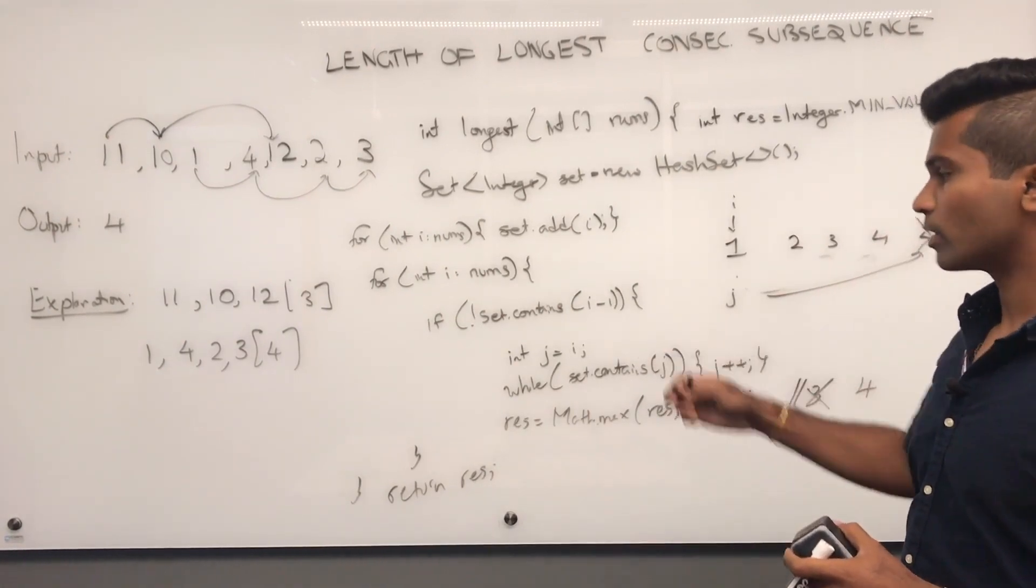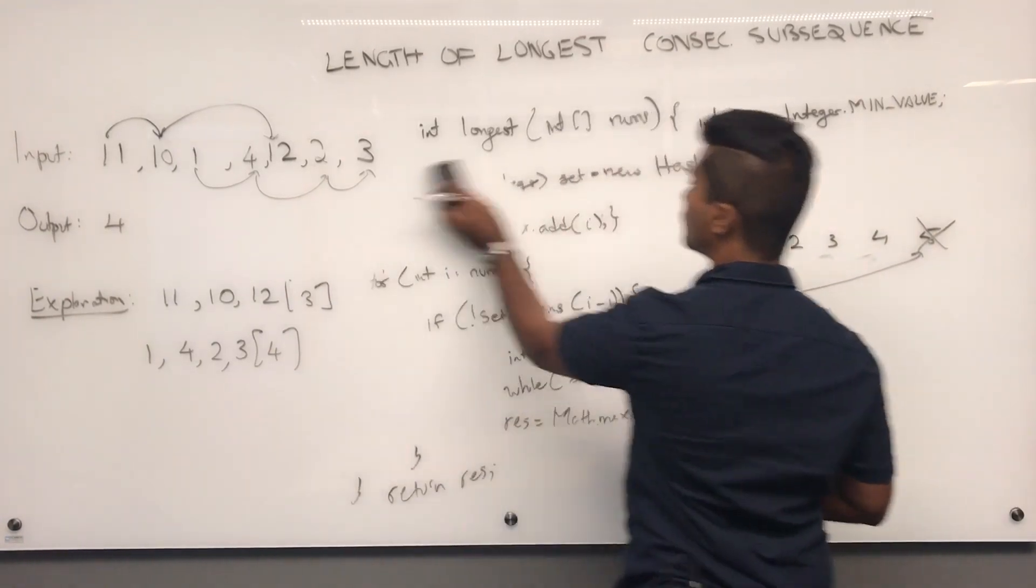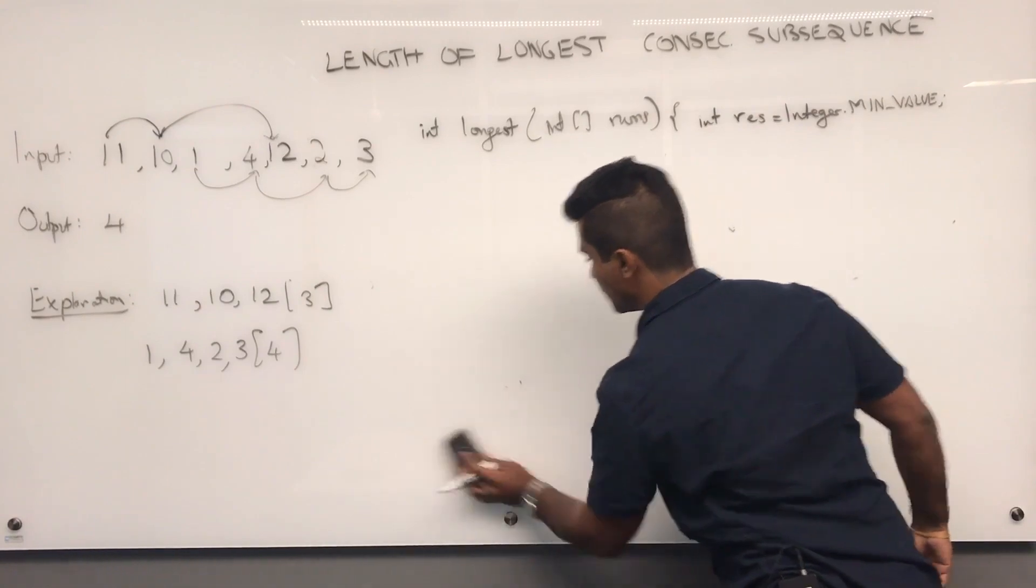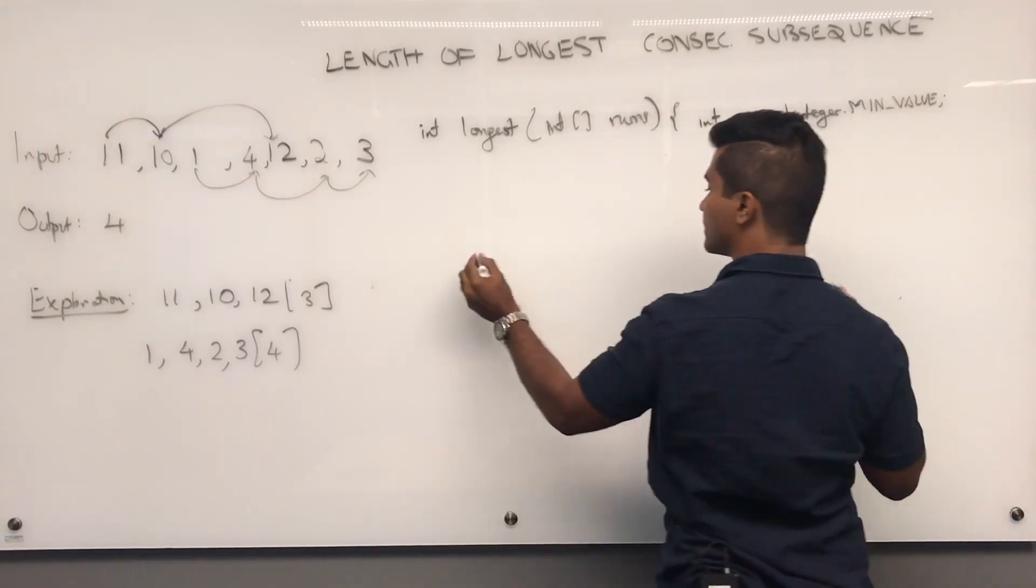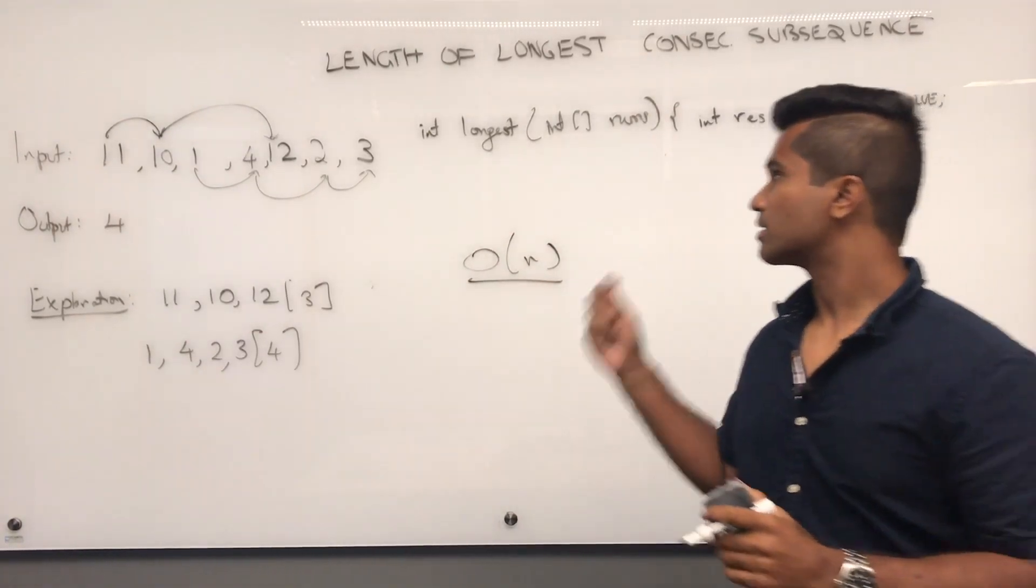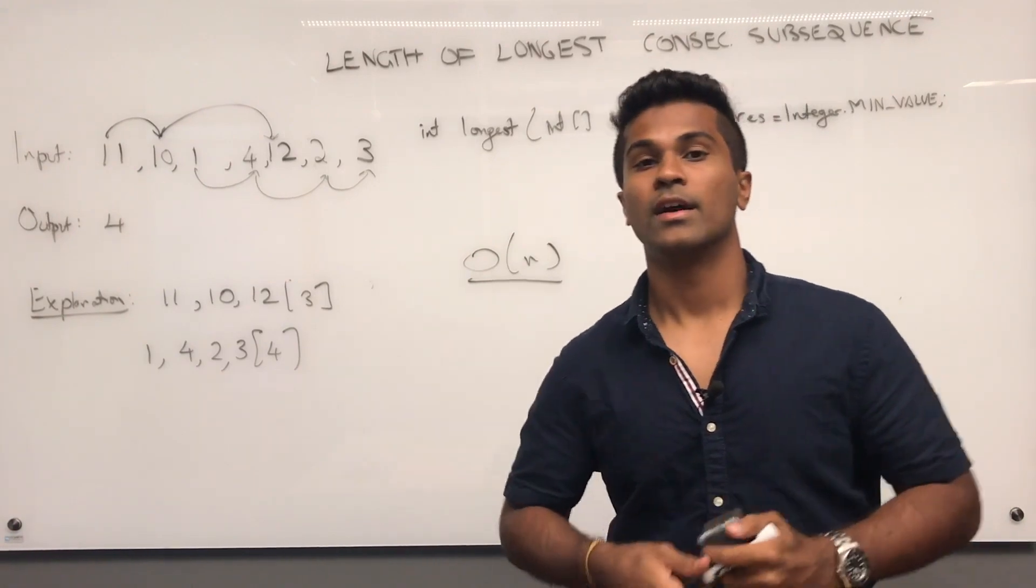And the runtime complexity is going to be O of n because we're just going over the array one integer at a time. So, O of n is the runtime complexity. That's essentially how you solve it and get the longest length. Thanks for watching.